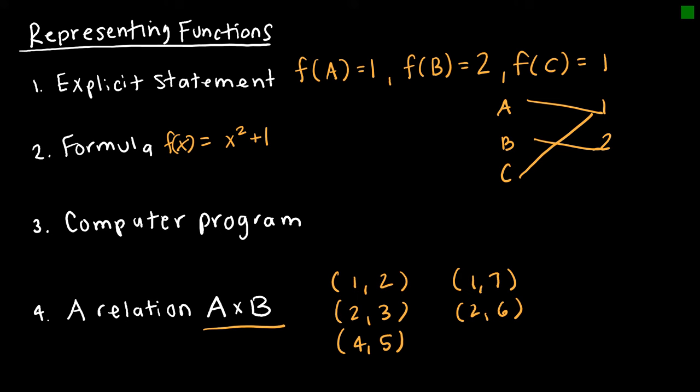We could have a function if we only have one ordered pair for every element of A, which means this subset could be considered a function because I have not reused the x value of my ordered pair. Notice I did not include these two, which did reuse the 1 and the 2 from before.